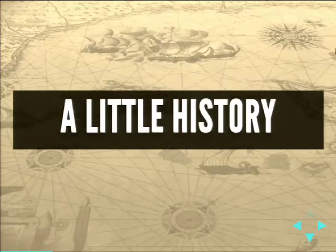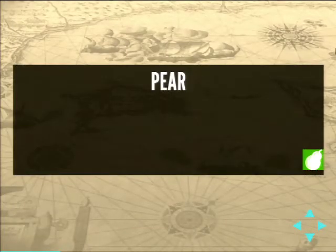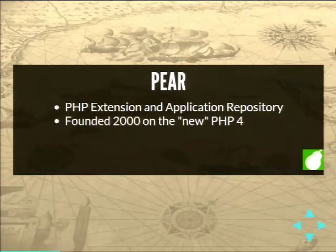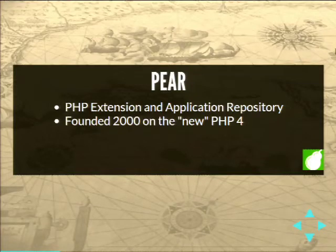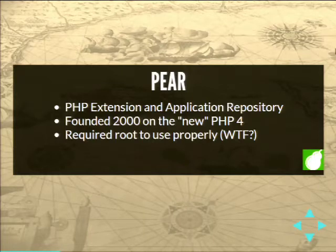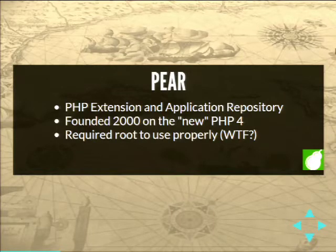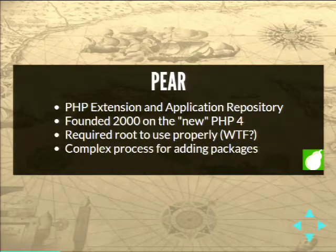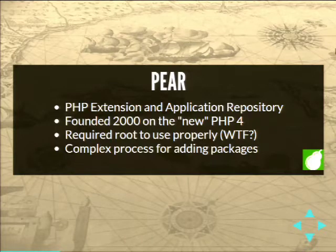We'll get into a bit of history behind Composer and why it happened. PEAR was the PHP Extension and Application Repository. It was founded in 2000 to support PHP, which at the time had classes to sort of share code. The only problem was it was based on Perl's approach to CPAN, which meant you had to use root on your server in order to use it properly. How many people have root on a shared host?